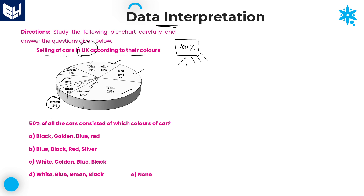Now read the first question. The first question is: 50% of all the cars consisted of which colors of cars? We want a combination that totals 50%. That 50% combination is obtained by the combination of which colors — that is the question.